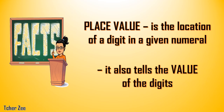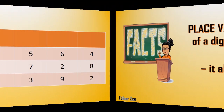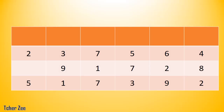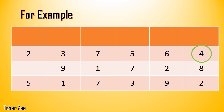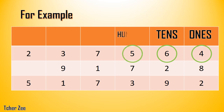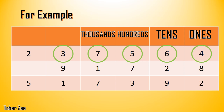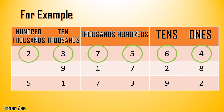When we say place value, it is the location of a digit in a given numeral. It also tells us the value of the digits. For example, 4 is located at the ones place value, 6 is at the tens place value, 5 is at the hundreds place value, 7 is at the thousands place value, 3 is at the ten-thousands place value, and 2 is at the hundred-thousands place value. Let's try another.